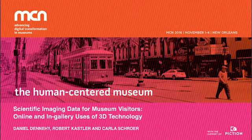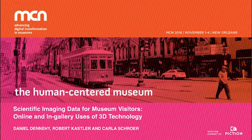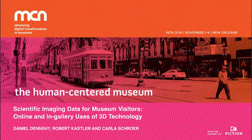Question: what was your decision process to choose photogrammetry over a laser scanner or structured light scanner, given they all have strengths and weaknesses? Response: From the perspective of Cultural Heritage Imaging, everything we do is image-based — we totally believe that computational photography and image-based approaches are where it's at and where it's going. It's a huge area of research; stuff's going to get better and better. For us it's about archiving the data — we know how to archive image sets — and about transparency of what's happening, and about the data being able to be used in multiple packages and into the future.